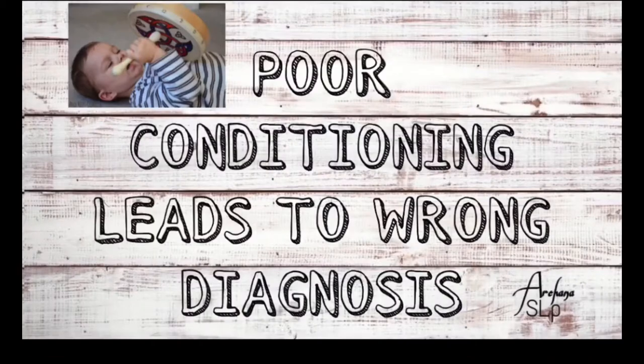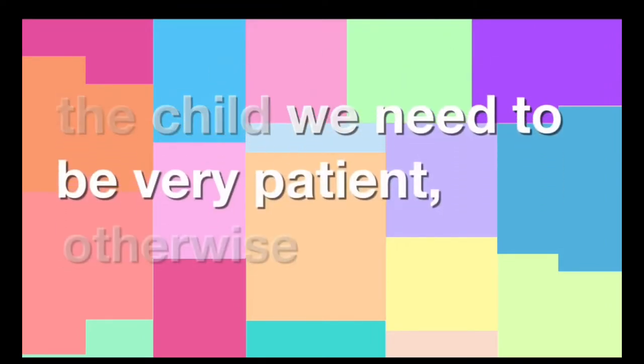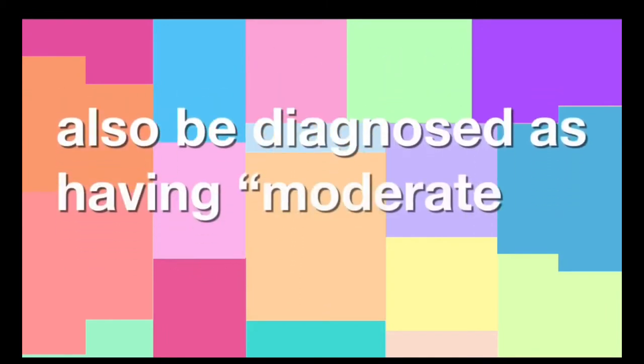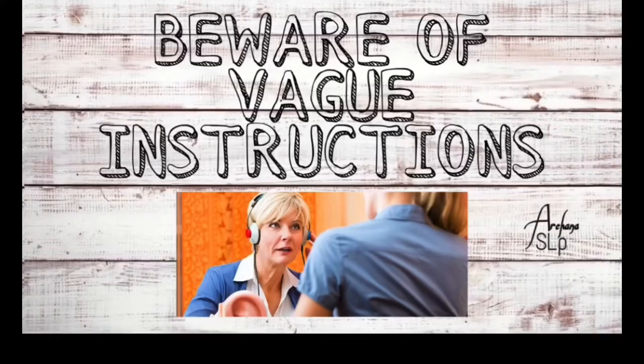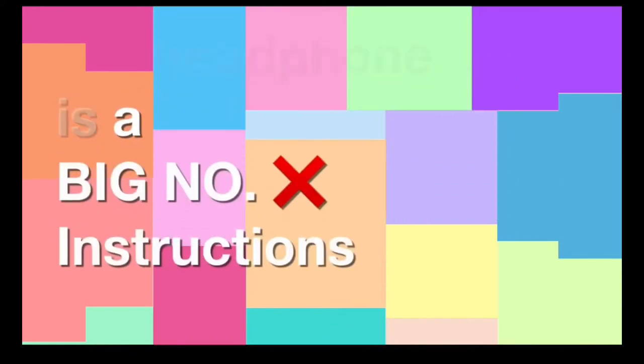Poor conditioning can lead to wrong diagnosis. While conditioning the child, we need to be very patient; otherwise a child having hearing sensitivity within normal limits can also be diagnosed as having moderate to severe hearing loss. Fifth tip — beware of vague instructions. Giving instructions to the client after putting the headphones on is a big no. Instructions should always be given before and should be clear and to the point.